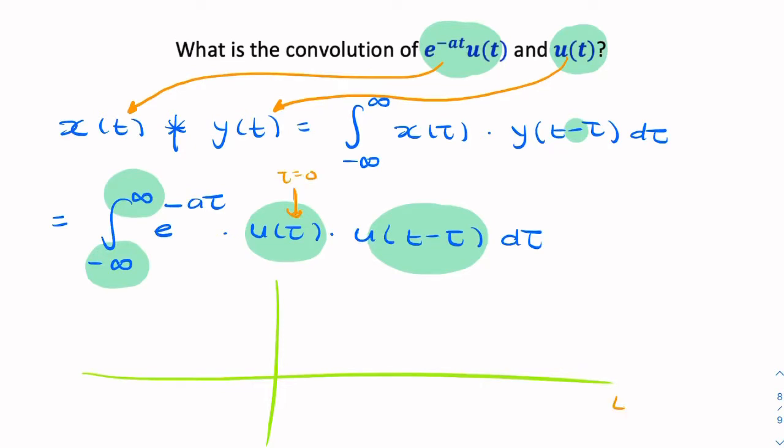we have another unit step that starts at tau equals t. So that could be here t, so our unit step might look something like this. Now notice I've made a little assumption here. I've assumed that t is greater than zero.